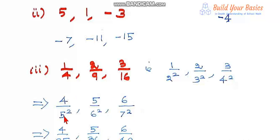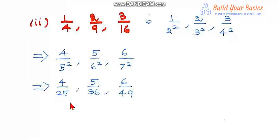So the three terms are 4/5², 5/6², and 6/7², that is 4/25, 5/36, 6/49. That's all.